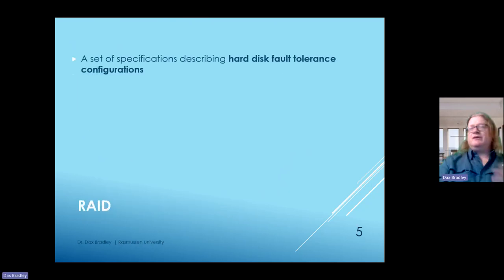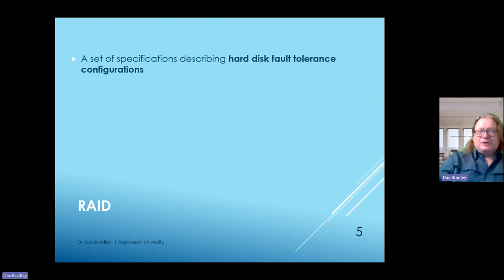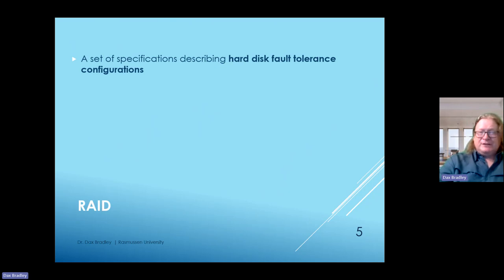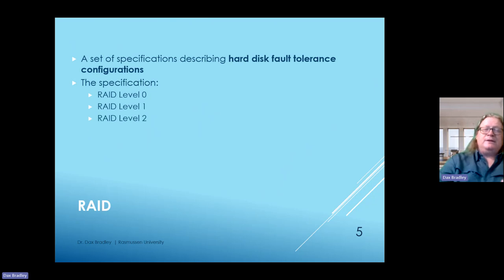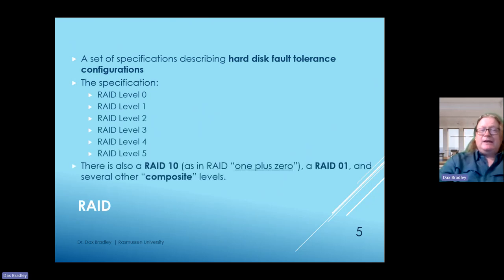There are different configurations we need to understand in order to have a serious conversation about fault tolerance. There are specifications in the RAID system: RAID level 0, 1, 2, 3, 4, 5, and one we can call 10—or 1 plus 0. Either way is correct. RAID 01 and several other composite levels also exist.